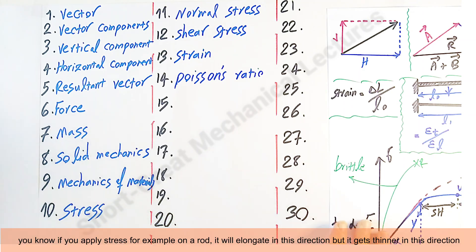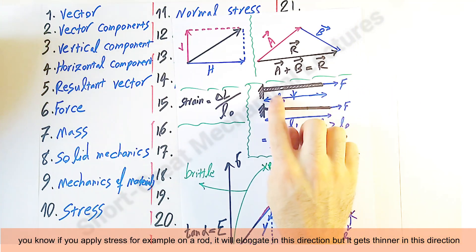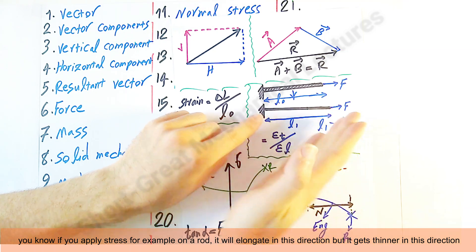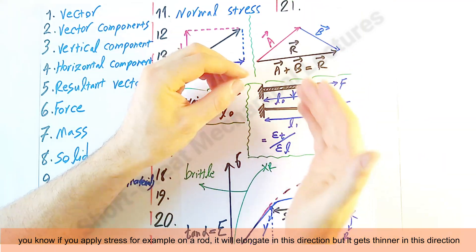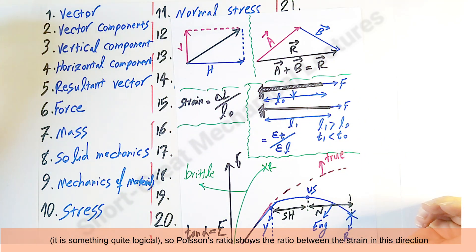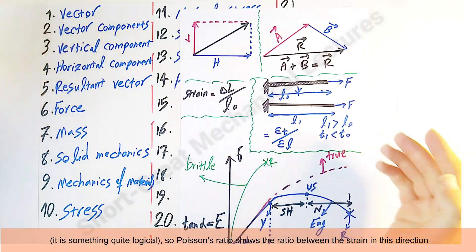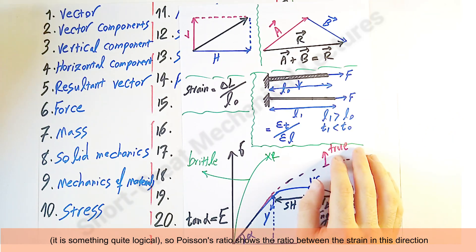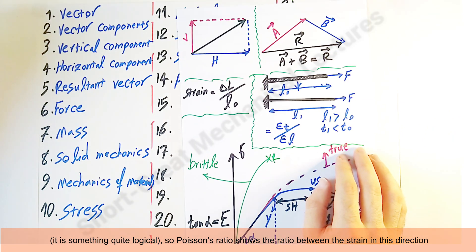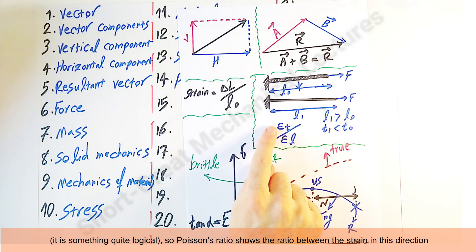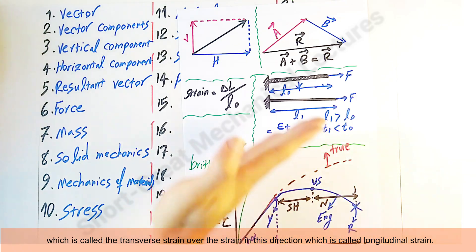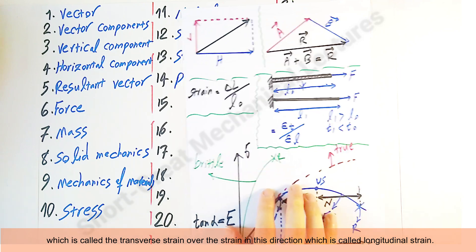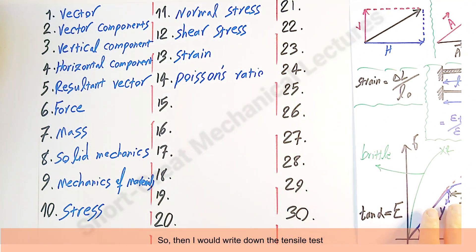If you apply stress on a rod, it will elongate in this direction but it gets thinner in this direction. Poisson's ratio shows the ratio between the strain in this direction — called the 'transverse strain' — over the strain in the elongation direction — called 'longitudinal strain.'